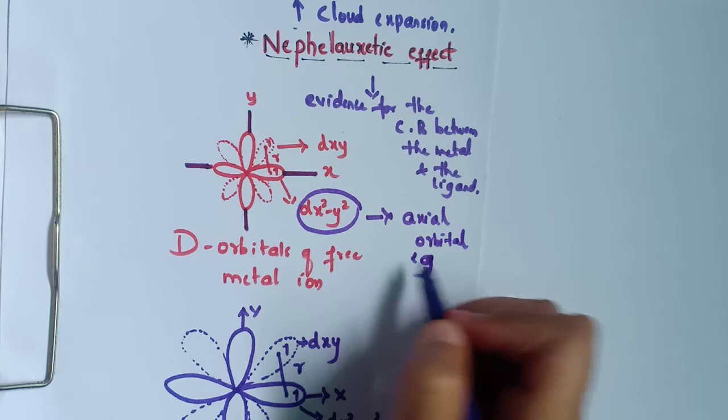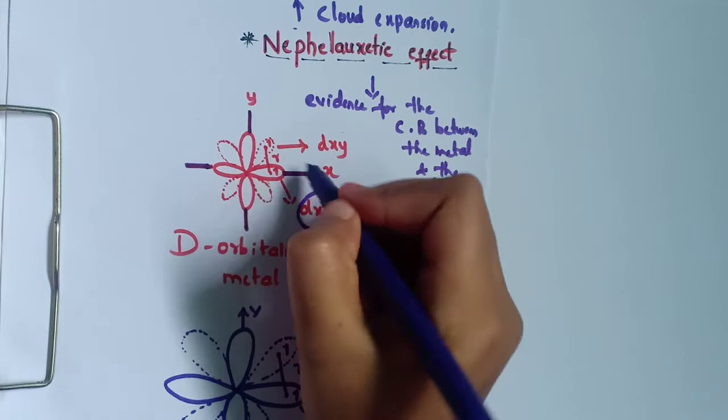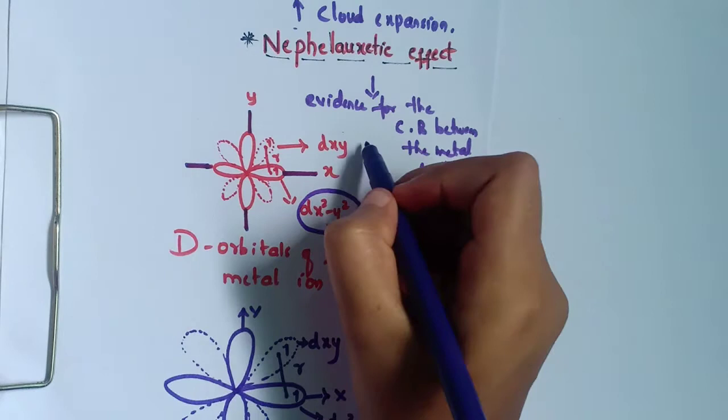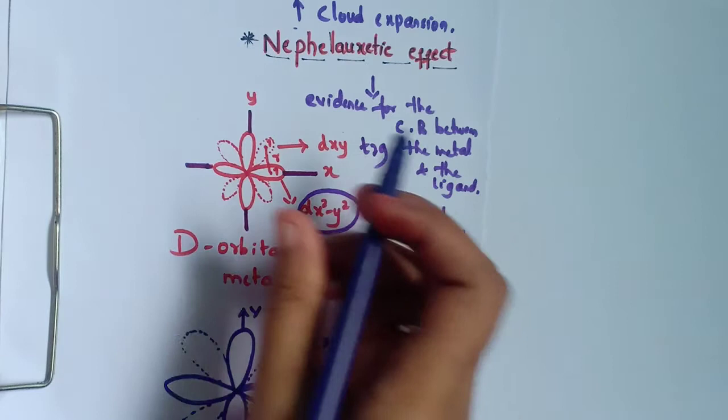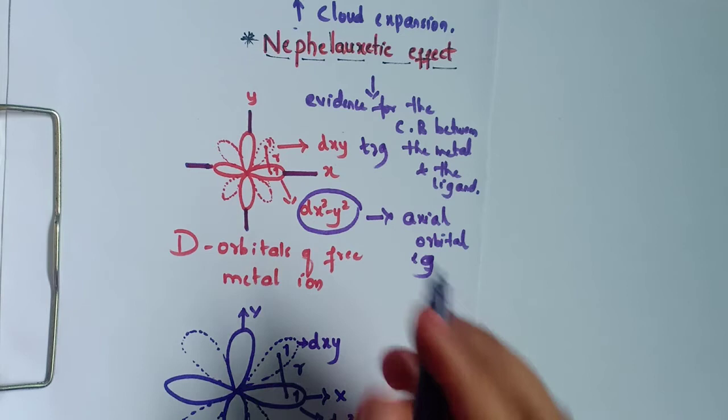The dxy orbital is oriented between the axes, so it is called a non-axial orbital. These are the t2g orbitals. There are three types: dxy, dyz, and dxz. For convenience, only dxy is shown here.